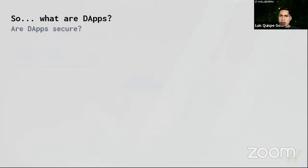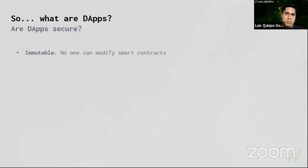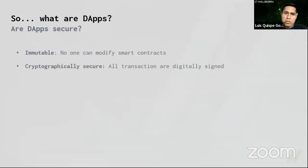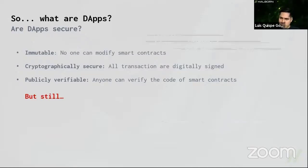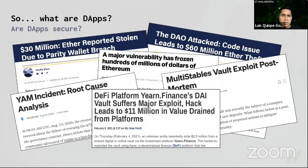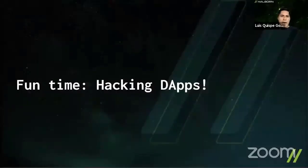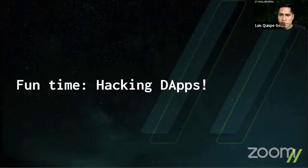The big question is: are dApps secure? As far as we know, smart contracts and dApps are immutable — no one can modify them. All users sign transactions, and the code of the smart contract is available for everyone to read and interact with. So what can go wrong? Many things. There are news stories about thefts of millions of dollars on blockchain platforms. Let's look at some examples — and now my favorite part: hacking. How can we hack dApps and smart contracts?